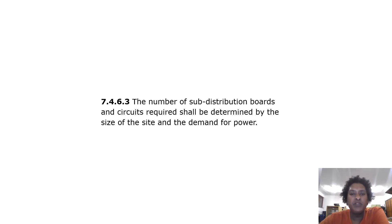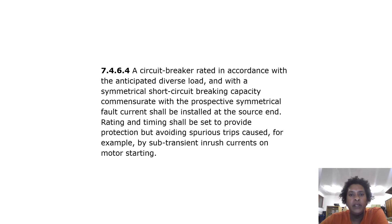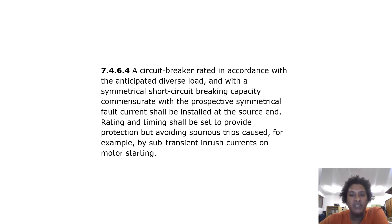The number of sub-distribution boards and circuits required shall be determined by the size of the site and the demand for power. A circuit breaker rated in accordance with the anticipated diverse load and with a symmetrical short circuit breaking capacity commensurate with a prospective symmetrical fault current shall be installed at the source end. Rating and timing shall be set to provide protection by avoiding spurious trips caused, for example, by sub-transient inrush currents on motor starting.